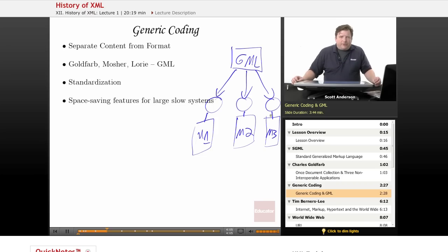This became a very powerful idea, and Goldfarb continued to work with IBM on creating an international standard out of GML, which is where the S in SGML comes from, and this work was completed by the 1980s.